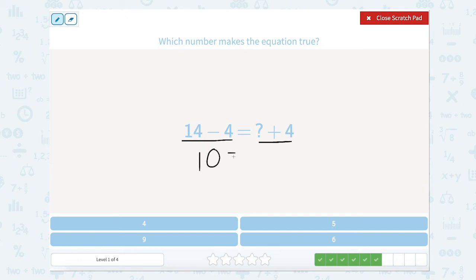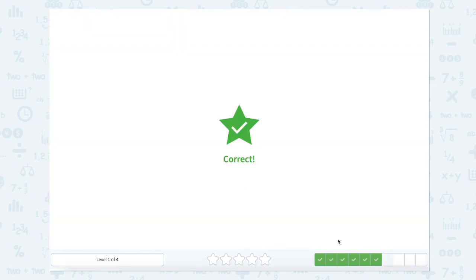So 10 equals something plus 4. Well, we can count up from 4 if we're not sure. But 4 plus 6 equals 10. So let's close that scratch pad and click 6.